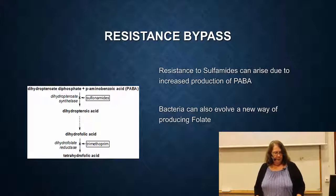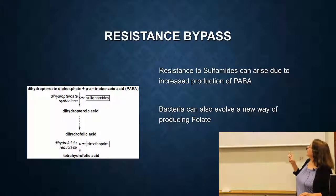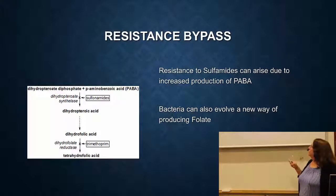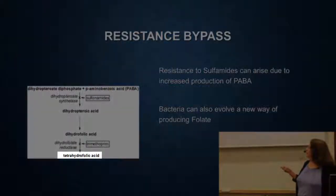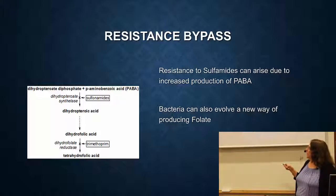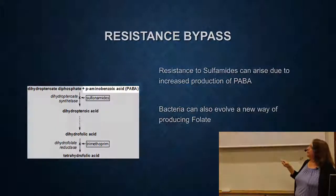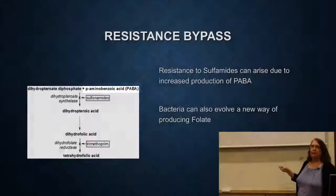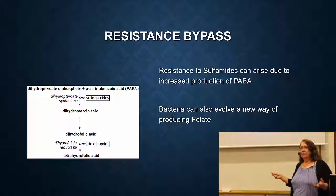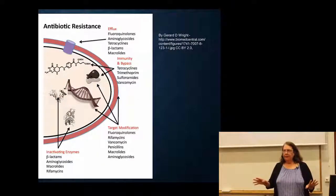The last mechanism is called resistance bypass. Recall the tetrahydrofolic acid pathway in metabolism, where two drugs inhibit the pathway. Bacteria can mutate so that they produce tetrahydrofolate through a different pathway entirely, or they increase the amount of the precursor — PABA — so that it forces the reaction to go through. This doesn't really change the target; the cell just bypasses the inhibition. Those are the four basic ways antibiotic resistance can occur.